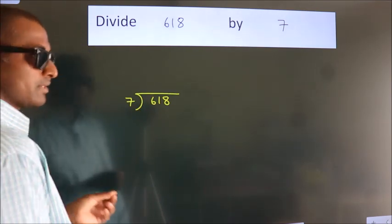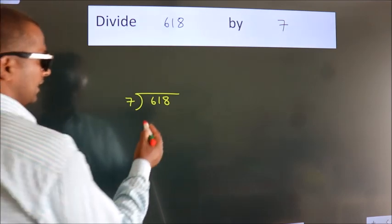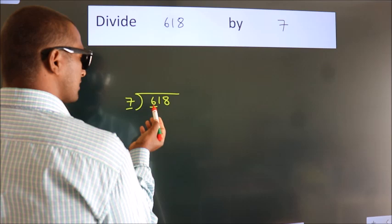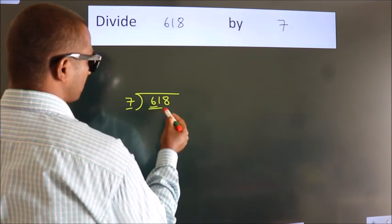This is your step 1. Next, here we have 6, here 7. 6 is smaller than 7, so we should take two numbers, 61.